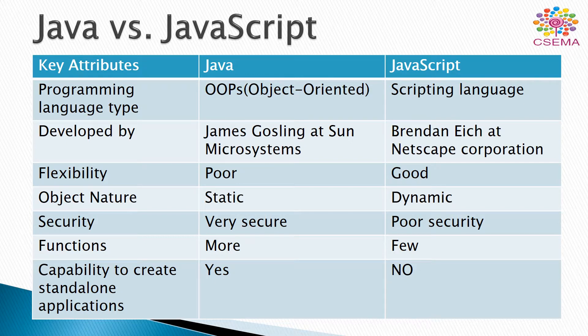Regarding the nature of objects: it is static in Java and dynamic in JavaScript. The security of applications developed using Java is very secure, while in JavaScript the security is not too good — that's why it has poor security. Java has much more functions and APIs, but JavaScript doesn't have as many, which is why it is also quite lightweight.